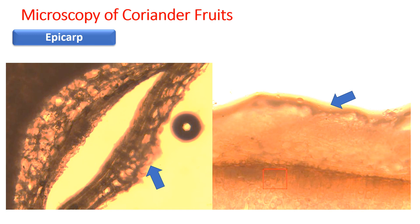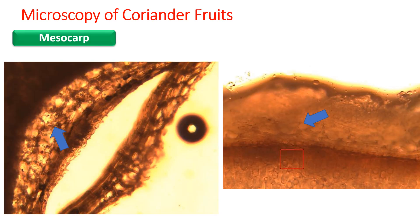This section has been stained with Sudan Red 3. As you can see in both images, the epicarp is getting a slight red color tint because the cuticle is oily in nature and absorbs the Sudan Red 3 dye, so you can see the red color appearing towards the periphery.